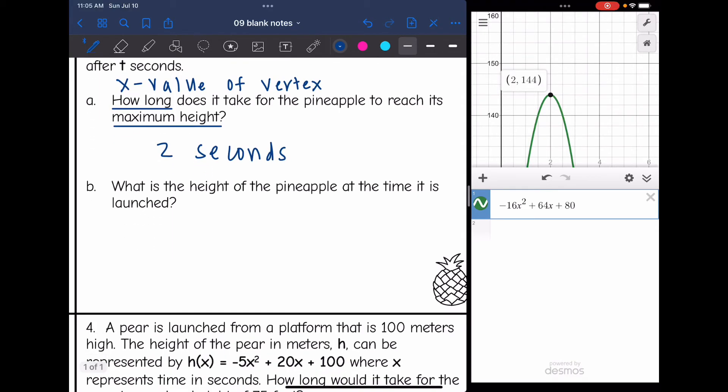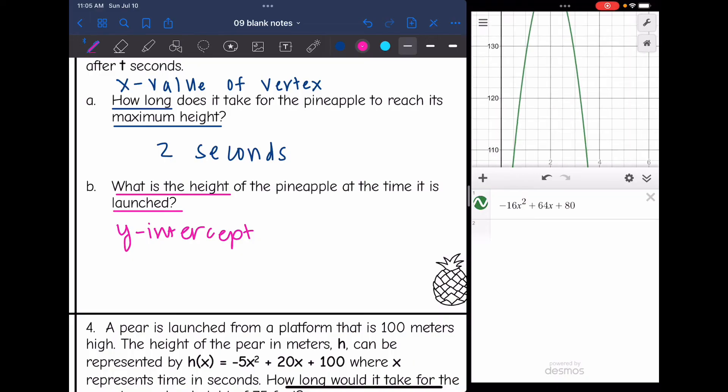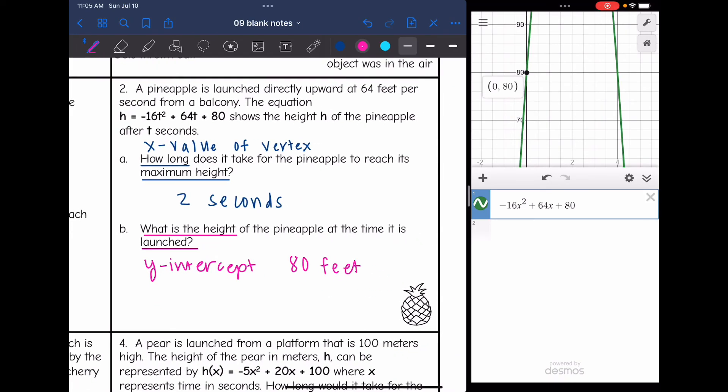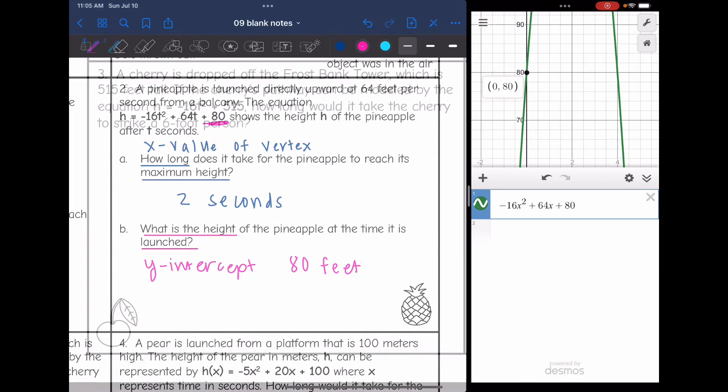The next question was, what was the height of the pineapple at the time that it was launched? This is asking for what was the height when we were just beginning. That's asking for the y-intercept of this graph. Let's go find the y-intercept. Looks like it's at 80 feet. Remember the y-intercept is easy to find from an equation in standard form. It's that c value, which was 80.